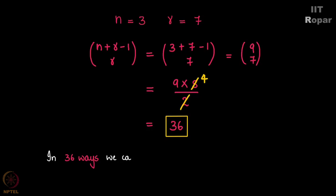So in 36 ways we can pick 7 balls of red, blue, green color from the big basket. Also please note that there are 36 integer solutions to the equation C1 plus C2 plus C3 equals 7. You might want to revisit the counting chapter for better understanding.